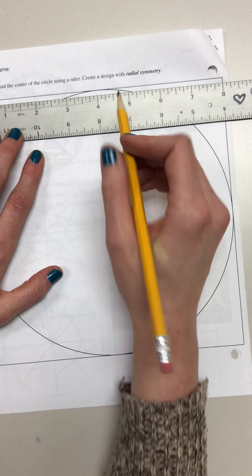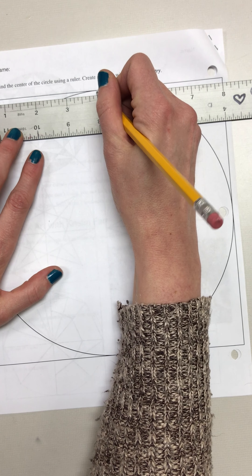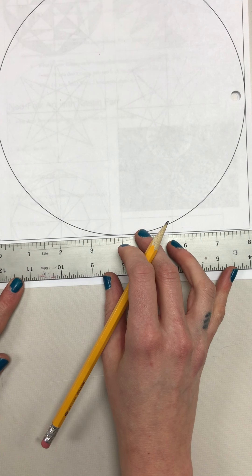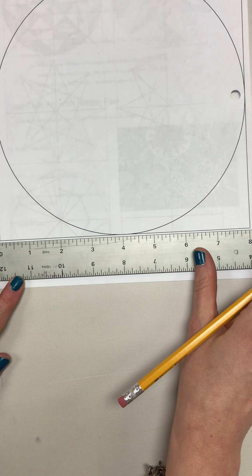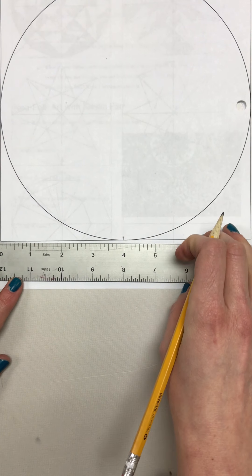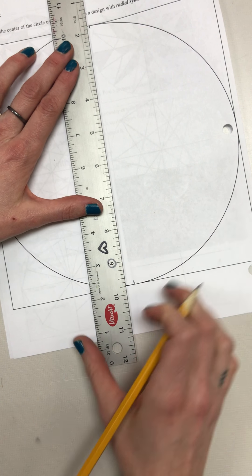So I'm going to make a little mark here at four inches. Same on the bottom—eight inches long. I'm going to make a mark at four inches. Be really precise. And then I can line up those two marks with my ruler and draw in my vertical line right through the center of my circle.